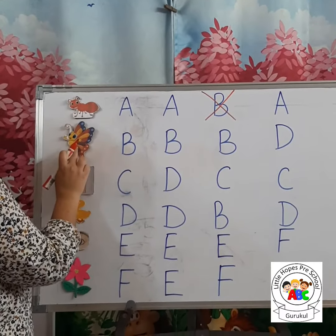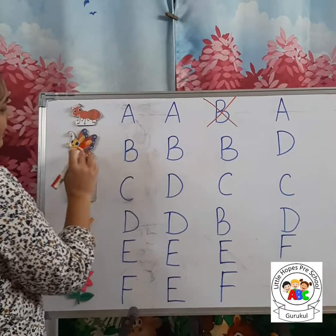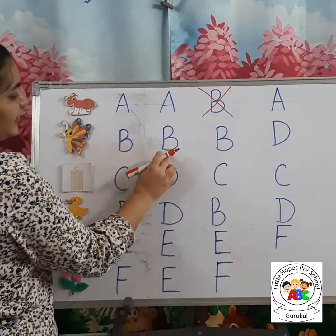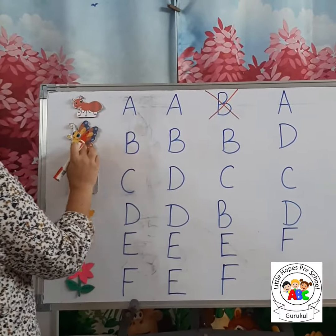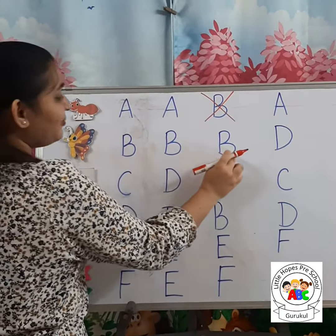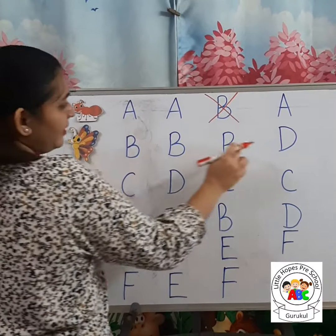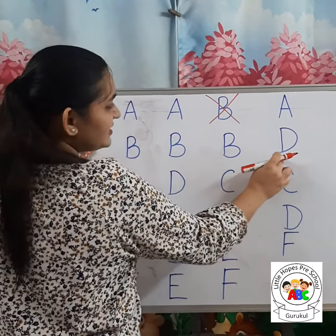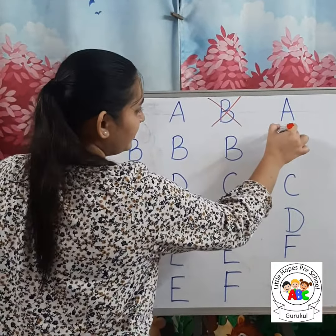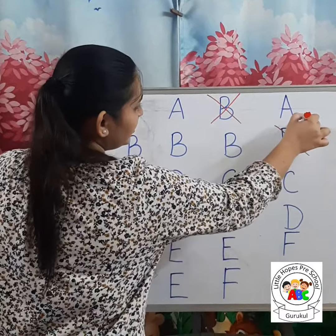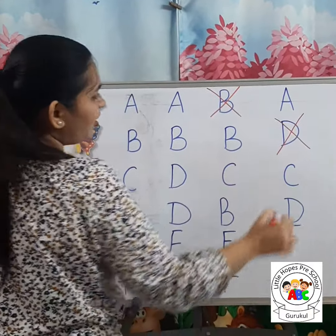Butterfly. B for Butterfly. And B for Butterfly. But this letter is not B — this is letter D. So let's put a cross.